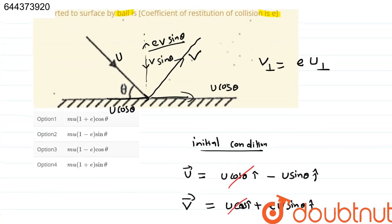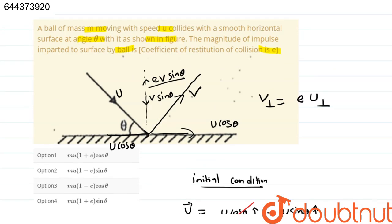So, from the given options, correct option is option 4: mu 1 plus e sin theta.